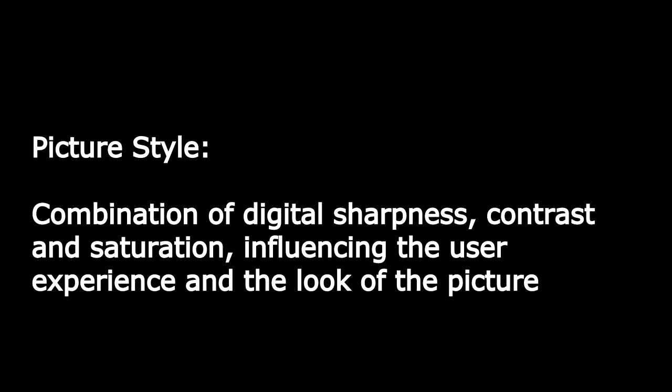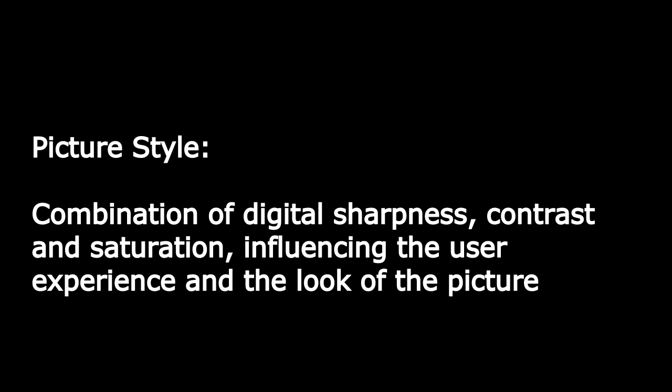When you start out filming with a new camera, you just use the standard picture style the camera has already set for you because you don't know what a picture style is. Basically, the picture style is a combination of sharpness, contrast, and saturation that influences the look and the user experience of the camera. Camera manufacturers want to make it easier for the user by adding a lot of these components, but especially in low light situations and places where there are a lot of shadows, these areas are going to be blacked out or the sky is just going to be overexposed, so you lose valuable details in the shot.